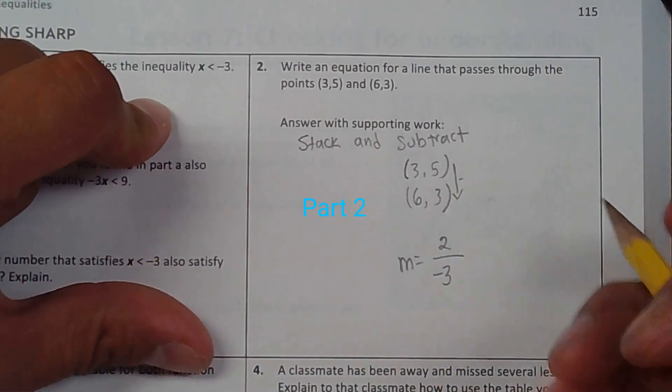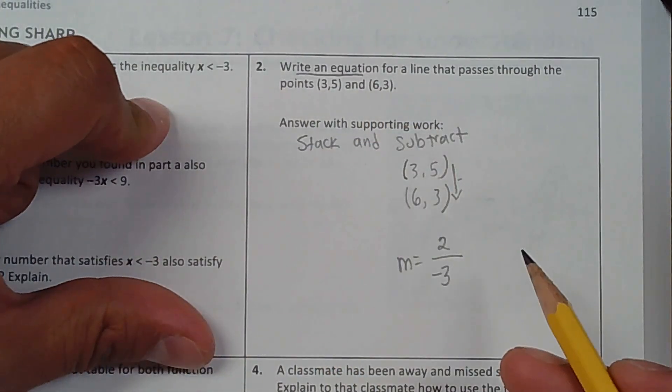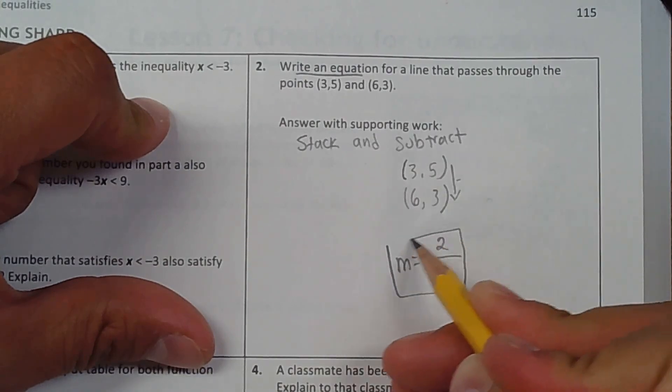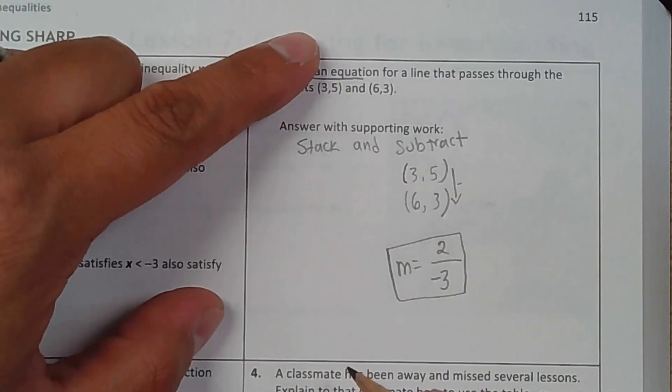Alright, so part two, they want us to find the equation of the line that passes through the point. Our first step was to find the slope, which we did by using stack and subtract. The next step is to find the equation.